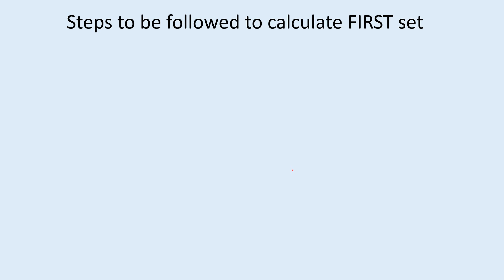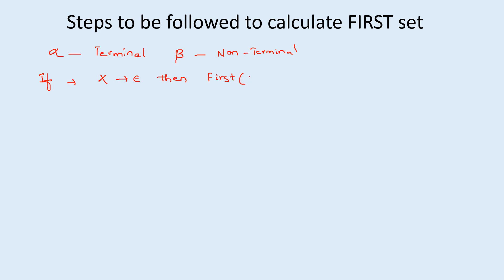Let us see the steps to calculate the first set. Here, consider alpha as a terminal and beta as a non-terminal. If the production is in the form x → ε, then the first of x will be only epsilon. If the production is in the form x → α (terminal only), then the first of x will also be the terminal itself — only the terminal alpha.